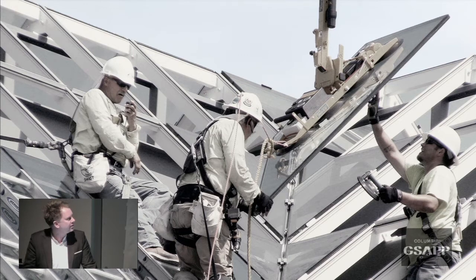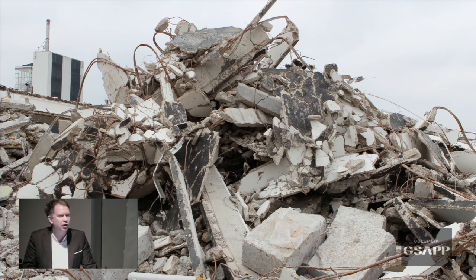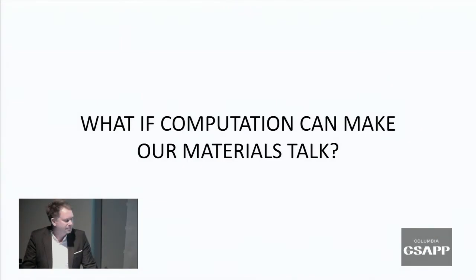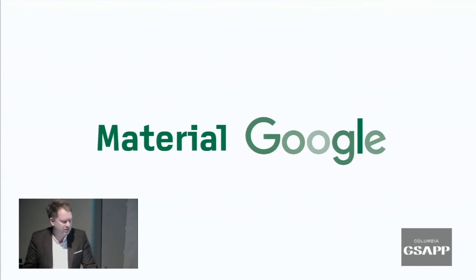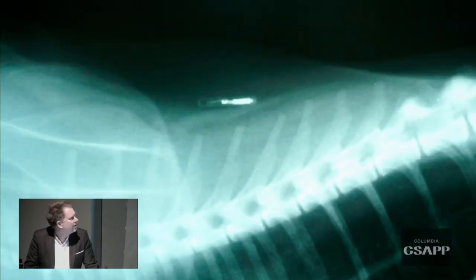Can we be as precise in construction when we build as this image implies? Everything gets really precisely carried out in construction, but if you look at how we deconstruct and demolish, it's really imprecise and there's a huge value loss. I think it's in this mix — combining this wasteful way of looking at building resources with computation — that real change happens. What if computation can make our materials talk? How can we use our knowledge from sensor technology and virtual design construction, the whole digital platform that we communicate on as people in the building industry, to make our buildings a kind of material Google?